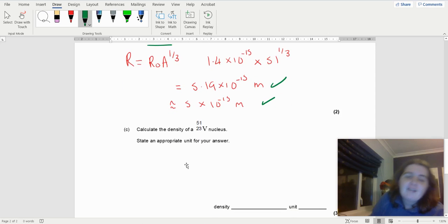Oh, I love this. Calculate the density of a vanadium nucleus. Yeah, so this is important. Density is mass over volume. The minute you see the word density, you write that down.